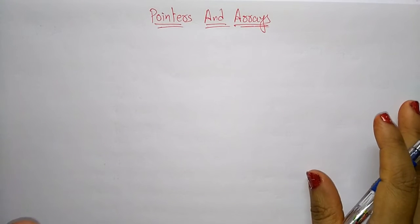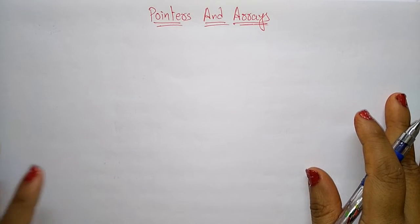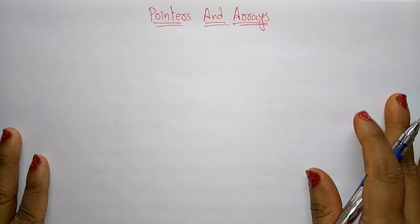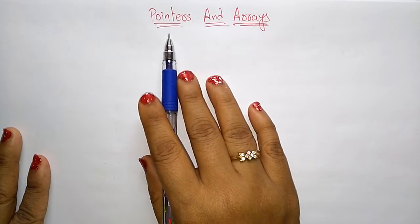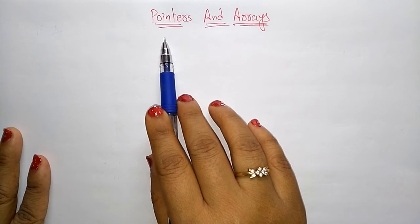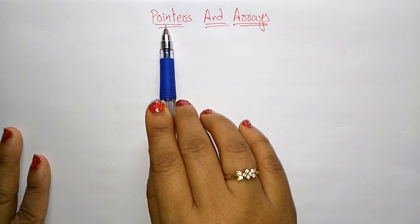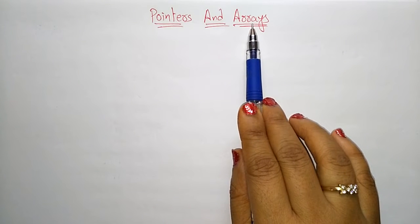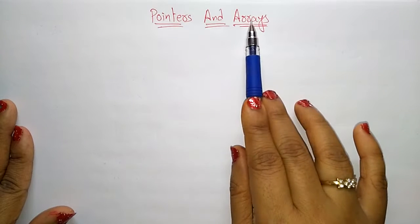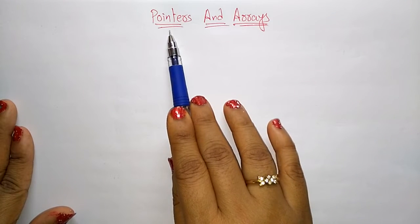Hi students, let us continue with the topic of pointers. In the previous video I explained about pointer initialization, declaration, and accessing pointers. Now let us see what pointers and arrays are. What is the difference between pointers and arrays? A pointer is a variable which holds the address of another variable, whereas an array is a group of elements sharing a common name.